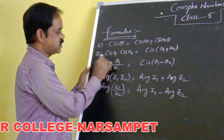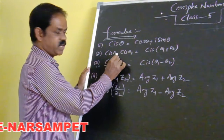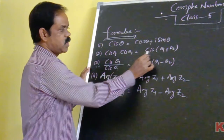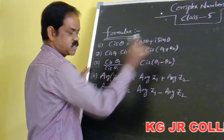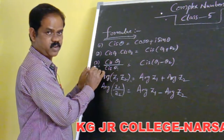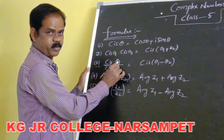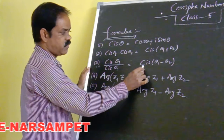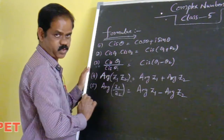The second formula is Cis theta 1 into Cis theta 2 is equal to Cis of theta 1 plus theta 2. The third formula is Cis theta 1 by Cis theta 2 is equal to Cis of theta 1 minus theta 2.